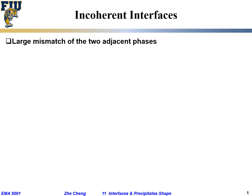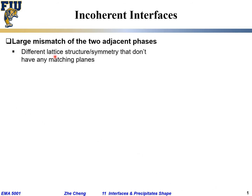For an incoherent interface, the two sides have a large mismatch. This can be due to completely different crystal structures or symmetry — for example, one is FCC and the other is monoclinic, so they don't match at all. Or they can have a very large difference in lattice parameter, like a larger metal with a very small metal — they really don't like each other.